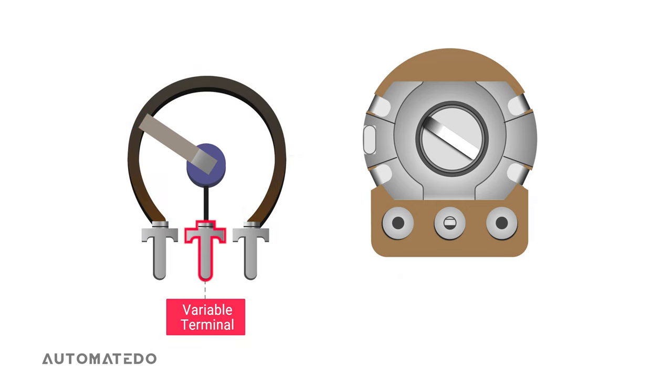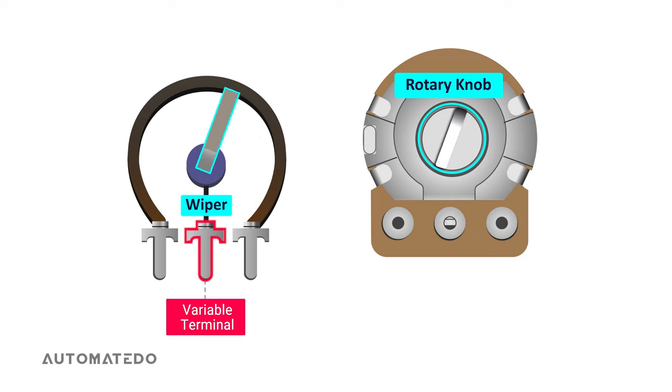The variable middle terminal is connected to a sliding contact, often referred to as a wiper, attached with a rotary knob. It means whenever we turn the knob, the wiper will run across the resistive element results in making good electrical contact.